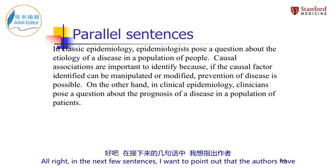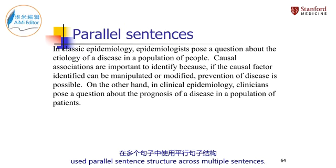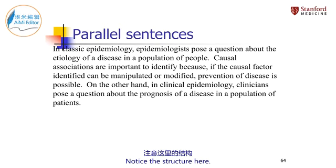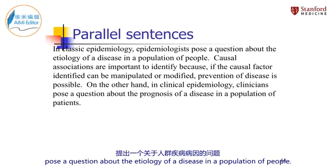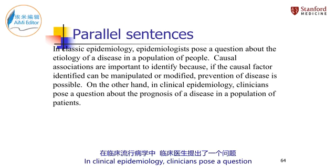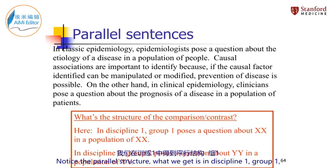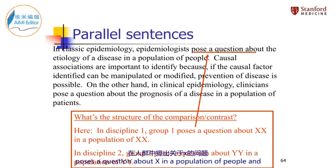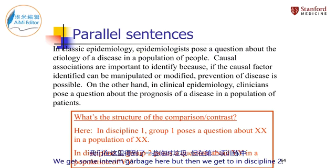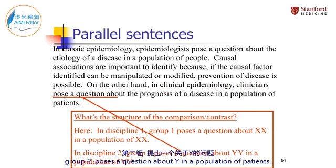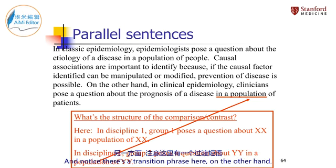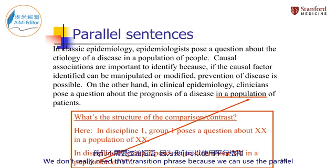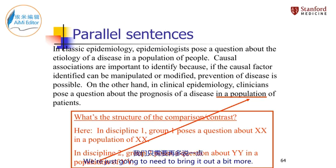In the next few sentences, the authors have used parallel sentence structure across multiple sentences — this is great, they just need to bring it out a bit more. They say: in classic epidemiology, epidemiologists pose a question about the etiology of a disease in a population of people. Later on, we get something very similar: in clinical epidemiology, clinicians pose a question about the prognosis of a disease in a population of patients. Notice the parallel structure — in discipline one, group one poses a question about X in a population of people; in discipline two, group two poses a question about Y in a population of patients. There's a nice parallel structure that helps with paragraph flow. Notice there's a transition phrase 'on the other hand' — we don't really need that because we can use the parallel structure to help with flow. We just need to bring it out a bit more.